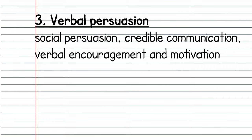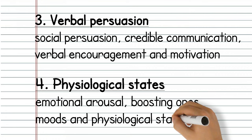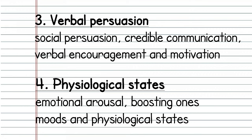Number three: verbal persuasion. Social persuasion, credible communication, verbal encouragement or motivation can boost self-efficacy, as can altering physiological states such as emotional arousal and boosting one's moods. If you're trying to encourage a client to stick to a diet, verbal encouragement through simple phrases like 'don't give up, stay strong, exercise willpower and stay focused' are simple ways to potentially increase self-efficacy. Or you could play on their emotions and alter their physiological state by saying 'think of how good you'll feel when you've got the body you've worked so hard for.' This is an appeal to someone's emotions by using cues to trigger them.